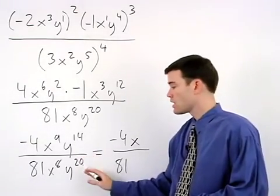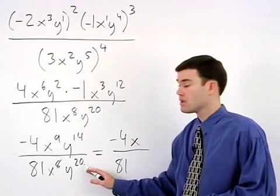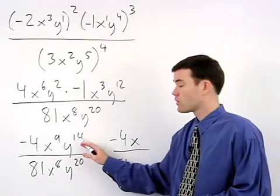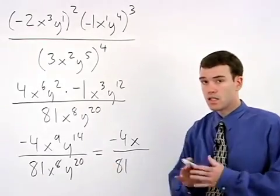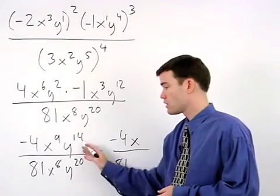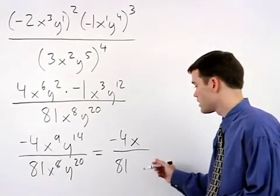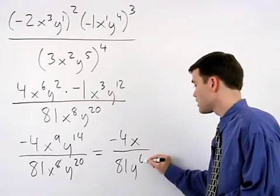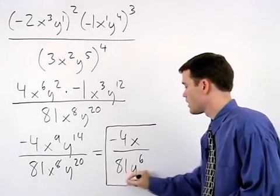And notice that for our y's, the exponent in the denominator is greater than the exponent in the numerator. In this situation, we still take the difference between our exponents, which is 6. But the y to the sixth goes in the denominator of your answer.